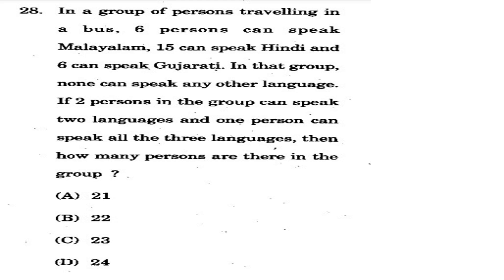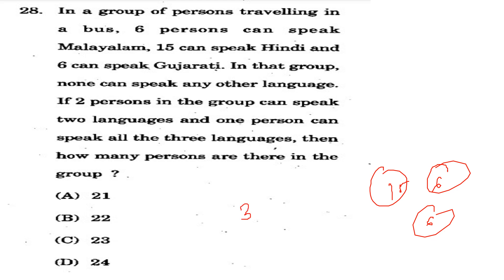Question 28: In a group of persons traveling in a bus, 6 persons can speak Malayalam, 15 can speak Hindi, and 6 can speak Gujarati. No one can speak any other language. If 2 persons can speak 2 languages and 1 person can speak all 3 languages, how many persons are there in the group? Using the Venn diagram formula, the correct answer is option C - 23 persons.